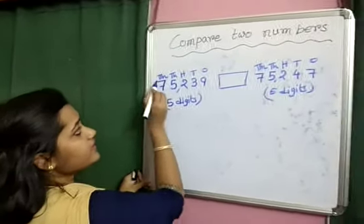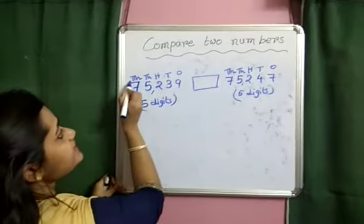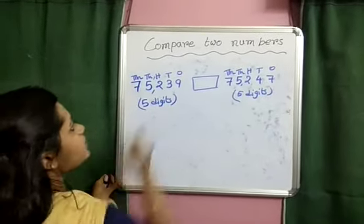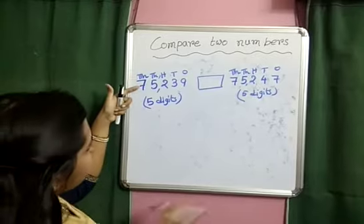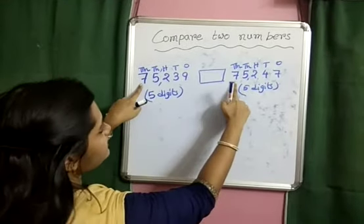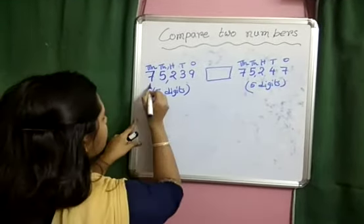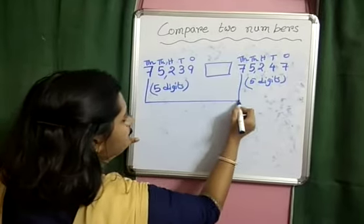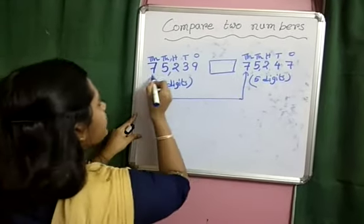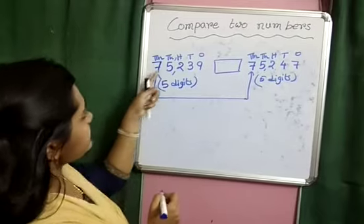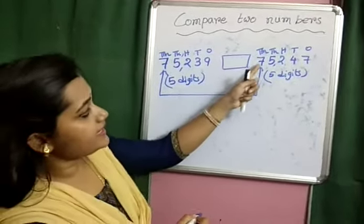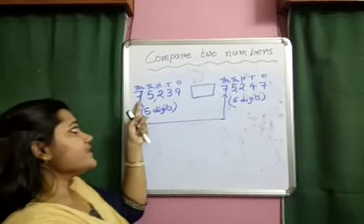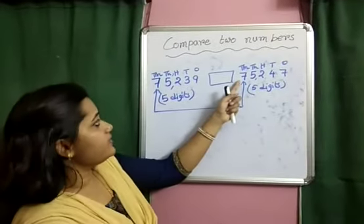In both cases, the highest place value is 10,000. Compare the digits under the highest place. In both cases, the digit under the highest place is the same — here it is 7, and here also it is 7.